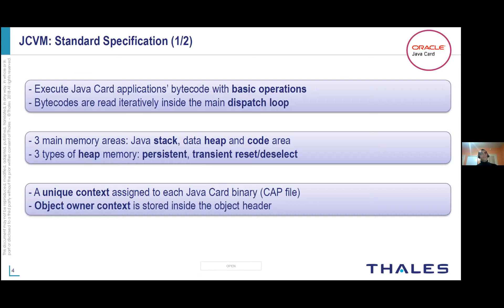The Java card standard specification specifies the expected behavior of the Java card virtual machine, that is to execute and interpret Java card applications bytecode. Each opcode is read iteratively in the main dispatch loop from the code memory, and each opcode may have a side effect on the Java stack or the heap memory. There are three heap memory kinds specified: either persistent, transient, reset, or deselect, according to the lifecycle of the Java card applications.